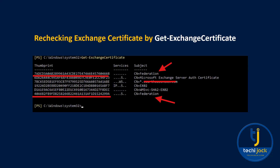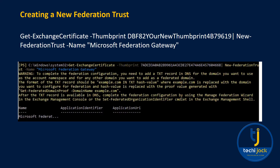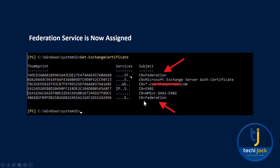The next step is to create a new federation trust. Run the commandlet using the new thumbprint from Get-ExchangeCertificate. You can see the command in action and the result on your screen. Once complete, you will see that the new federation service is assigned to the certificate.